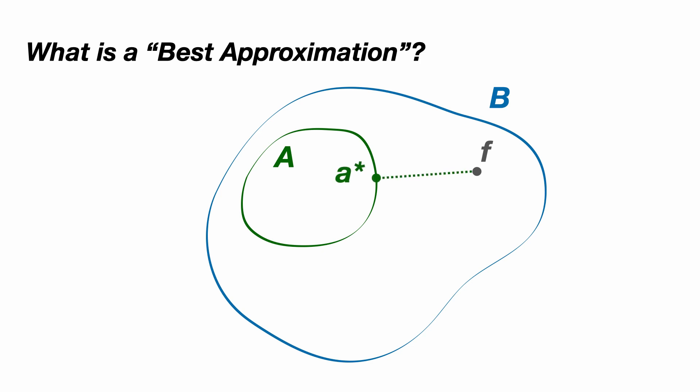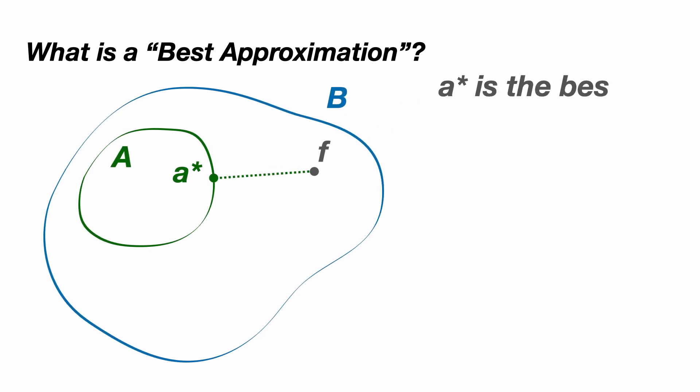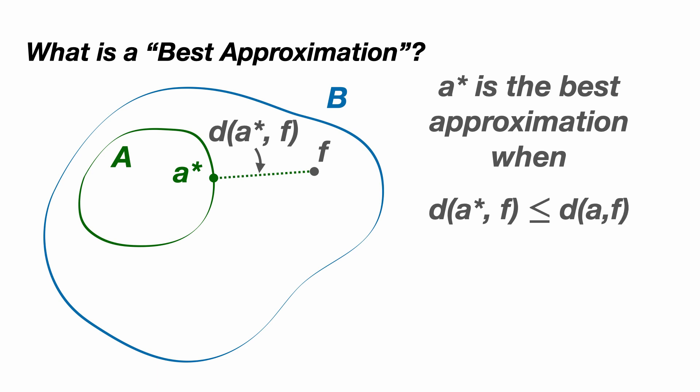And we call this A star. More formally, we say A star is the best approximation from capital A to F if the distance from A star to F is less than or equal to the distance between F and any other A in the set capital A.